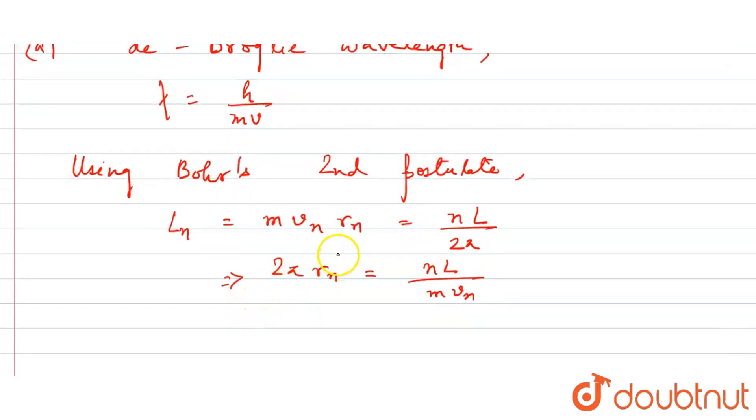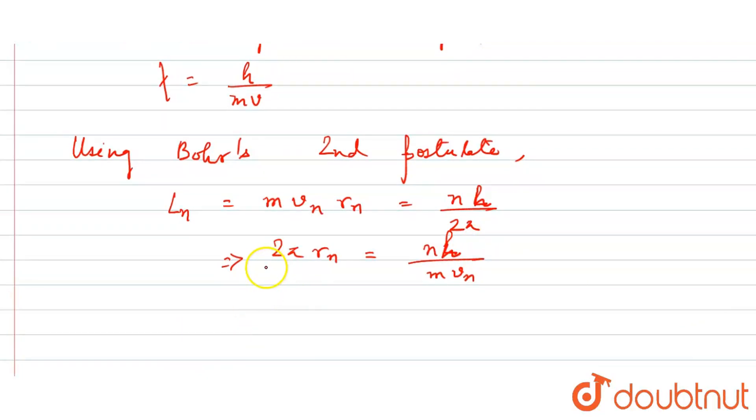Look, these terms are: m is the mass of the electron, vn is the velocity of the nth orbital electron, r is the radius of the electron in the nth orbital. So let's go. Sorry, this is h.